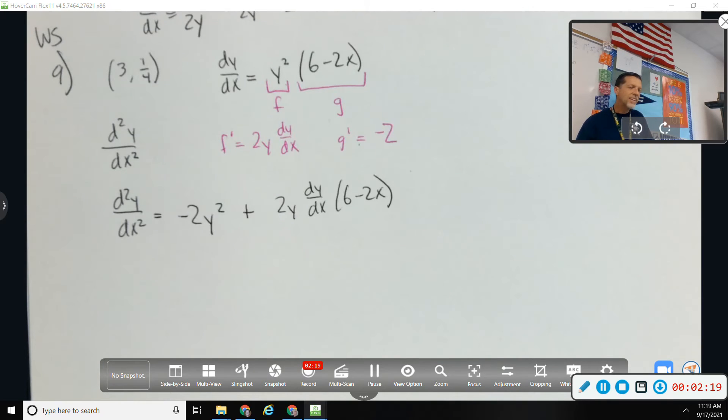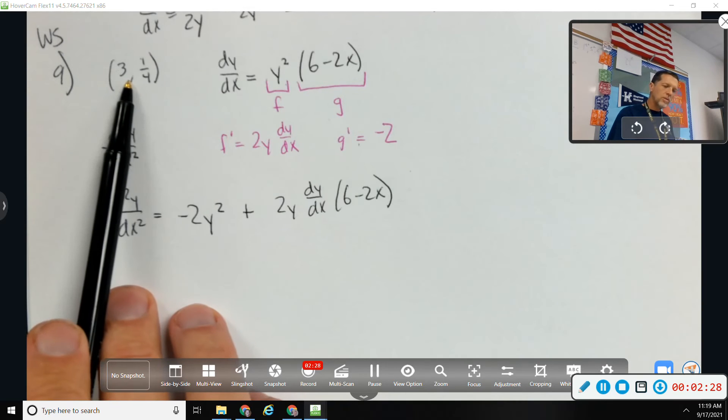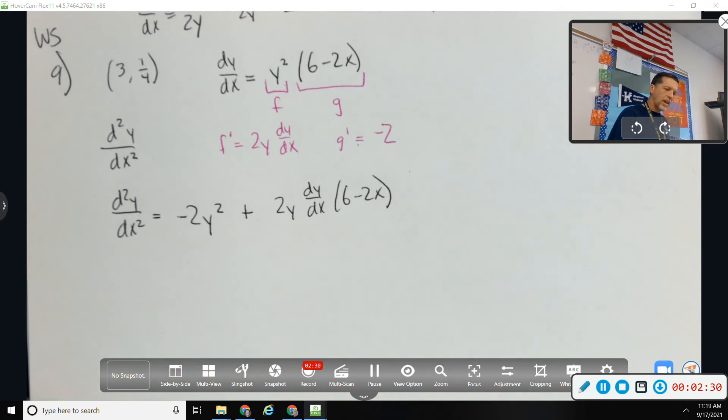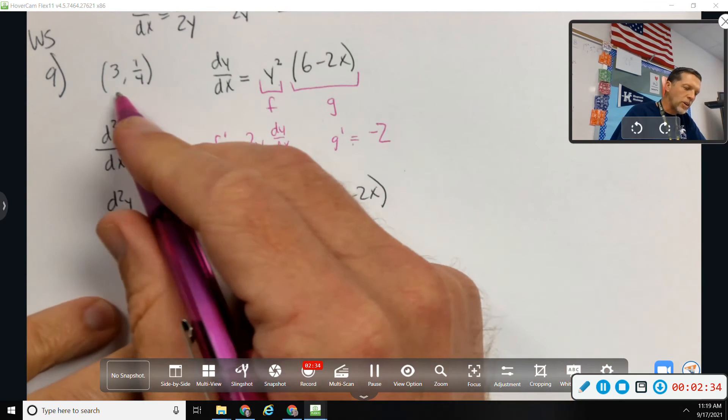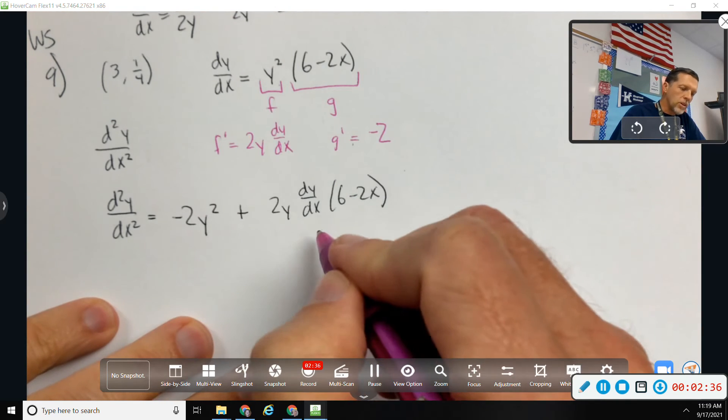That's kind of right, kind of not good enough, though, because if I want to evaluate that at 3 comma 1 fourth, there's a y. That's fine. I know what y is. What I don't know, and I know what x is.